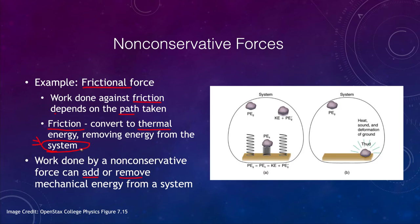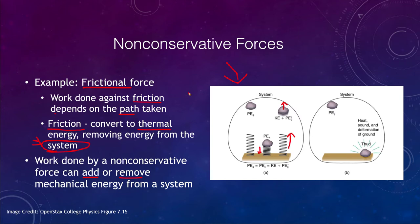Let's look at these two systems. On the left we have an example of conservative forces — when the object is dropped onto a spring, it compresses the spring. The spring is an example of a conservative force, so it will push the object back upward. When it reaches its maximum height and stops, it will have the exact same potential energy it had when it started, as long as we ignore non-conservative forces like air resistance and losses within the spring.